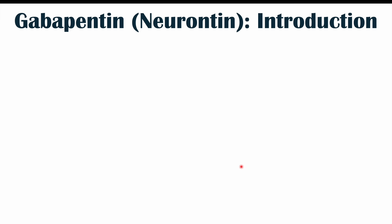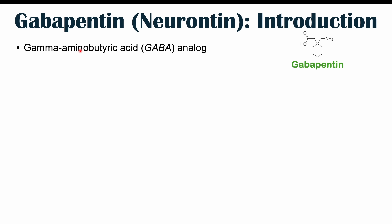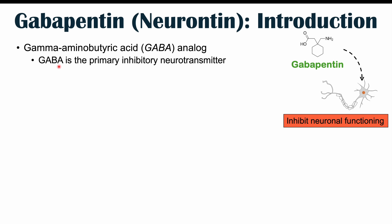Gabapentin, or Neurontin as it is also known, is a gamma-aminobutyric acid or GABA analog. GABA is a neurotransmitter, and it's the primary inhibitory neurotransmitter. This particular neurotransmitter suppresses other neuronal activity, so it inhibits neuronal functioning.